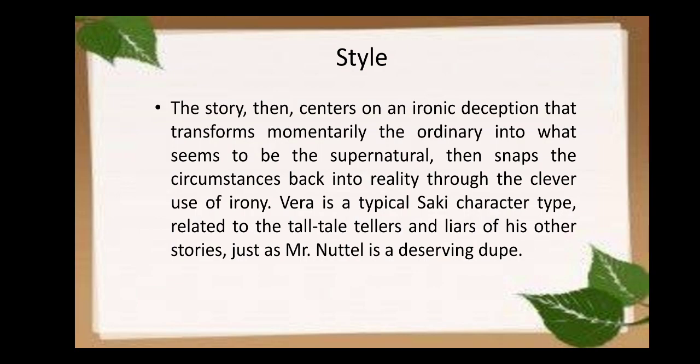The story centers on an ironic deception. Deception is a kind of cheating — you see irony and a kind of falsehood, a lie which transforms momentarily the ordinary into what seems to be the supernatural, then snaps the circumstances back to reality through the clever use of irony. This girl Vera is a typical Saki character type related to the tall-tale tellers and liars of his other stories, just as Mr. Nuttall is a deserving dupe.